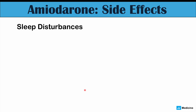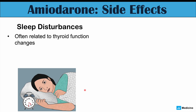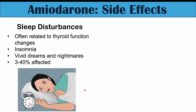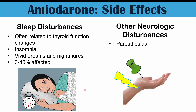Sleep disturbances can also be found in amiodarone patients, often related to thyroid function changes. If patients are experiencing hyperthyroidism, they can feel very jittery and have insomnia — difficulty falling asleep, staying asleep, or early morning awakening. Other patients can have vivid dreams or nightmares, affecting 3% to 40% of patients. Other neurologic disturbances include paresthesias — numbness and tingling sensations — and tremors, which can also be related to hyperthyroidism.